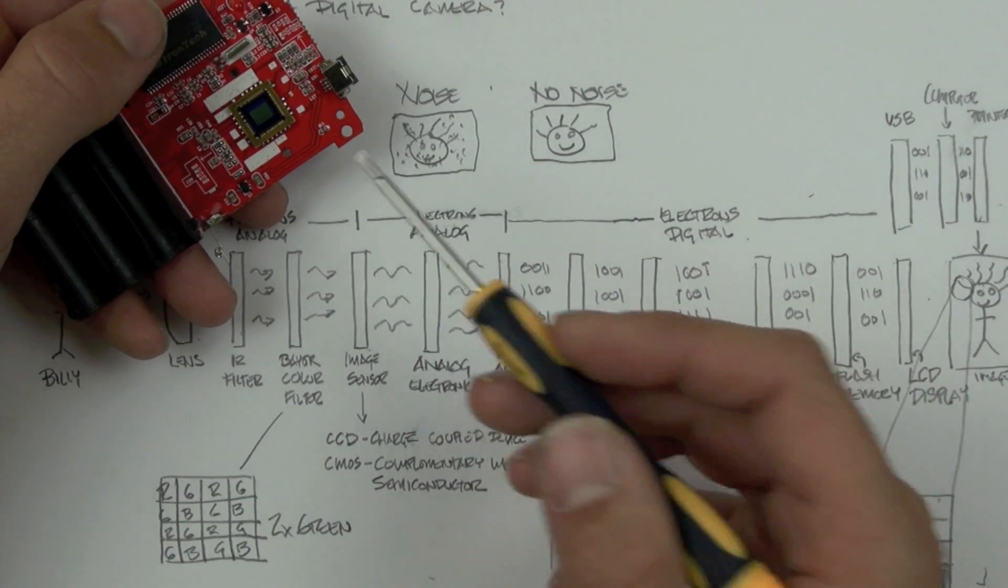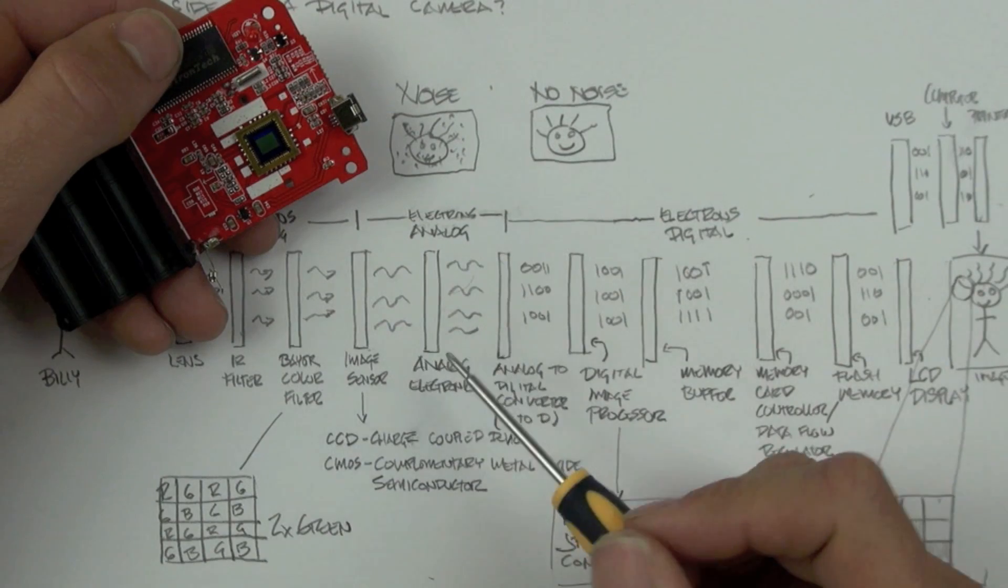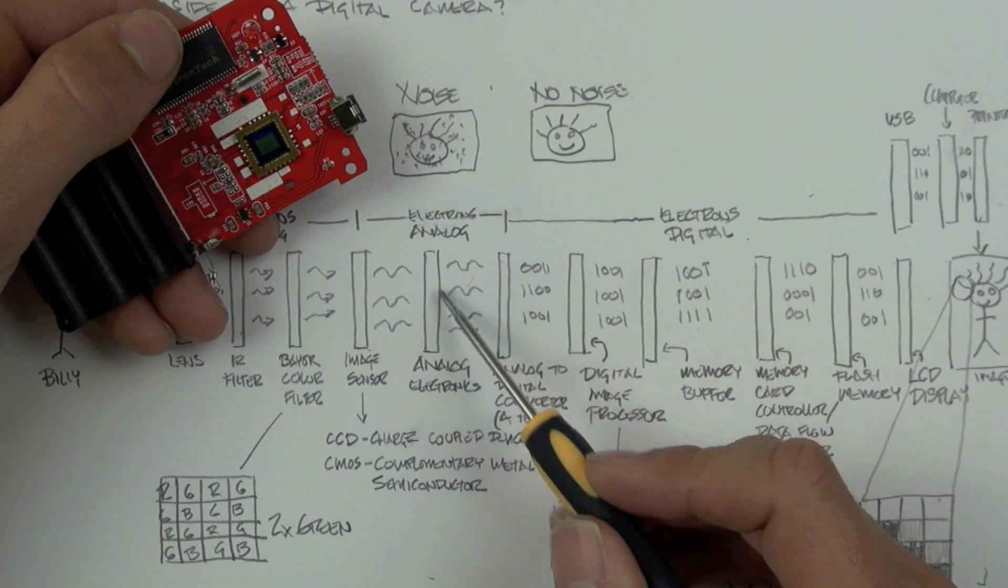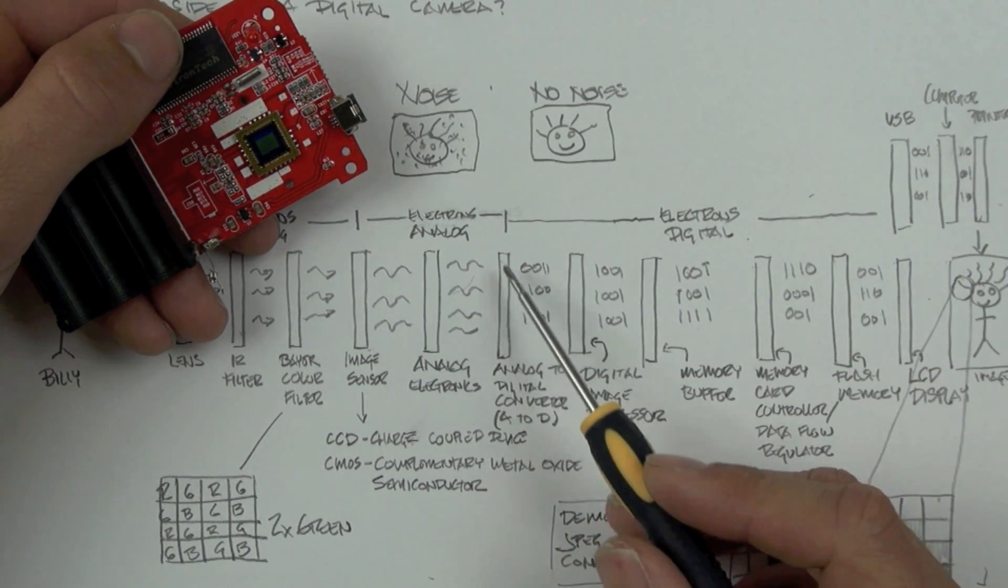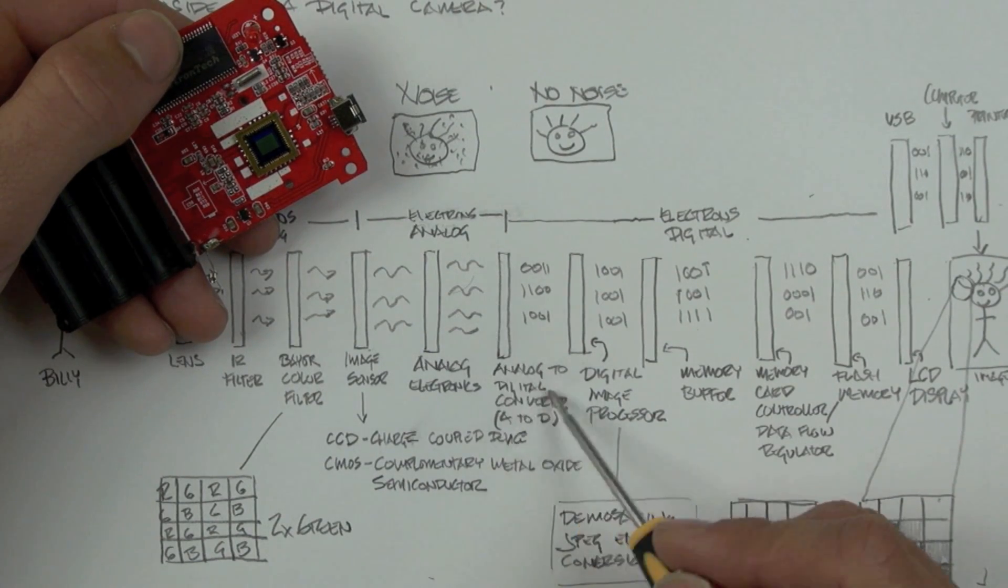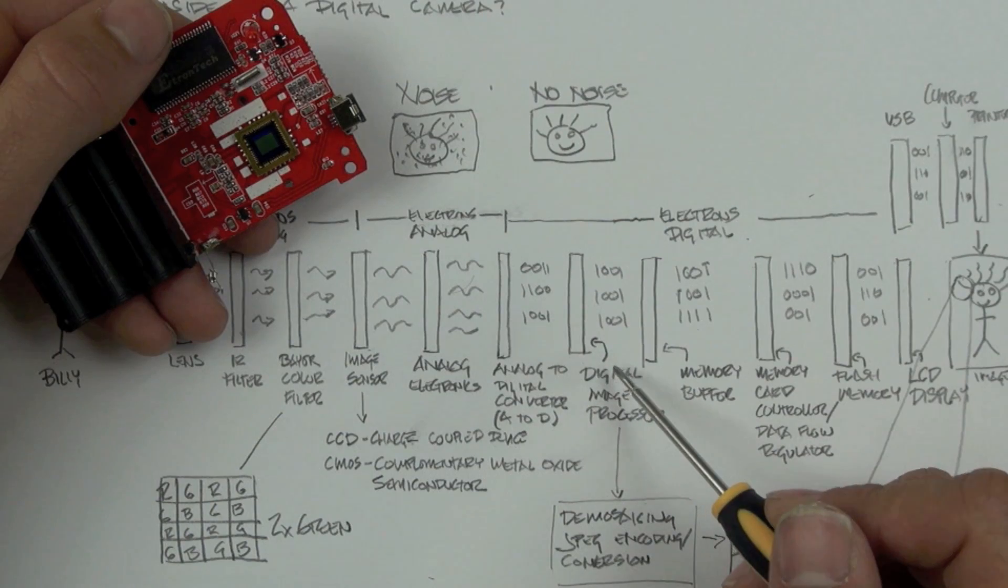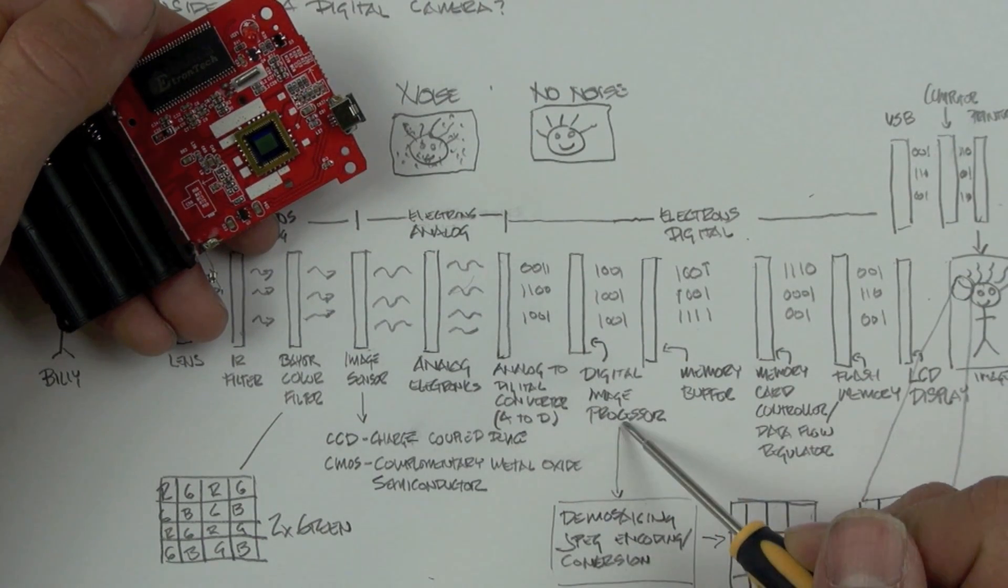Once the light hits the image sensor, it is converted into analog electrical signals. Those electrical signals are sent to a digital-to-analog converter, and then the digital signals, and you can see those represented by the ones and zeros, are sent to the digital image processor.